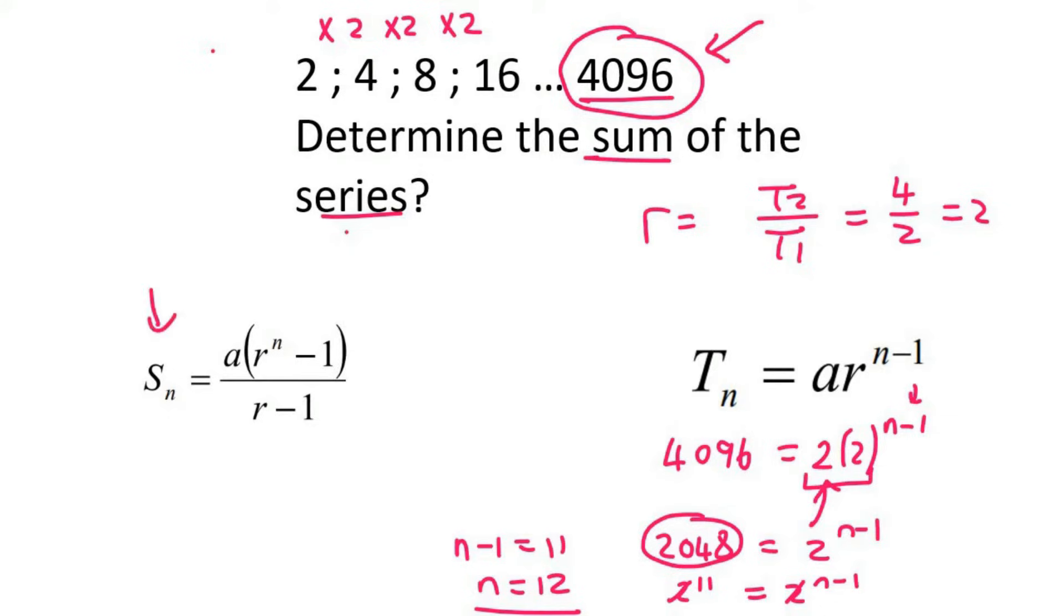Now we can use this formula here. And so the sum of 12 terms is going to be a, which is 2. The common ratio was also 2. N is 12. R is 2. And then you just go ahead and you will get 8,190.